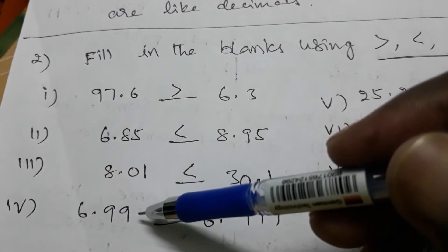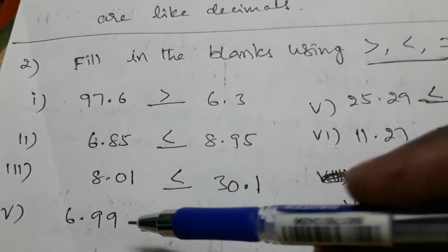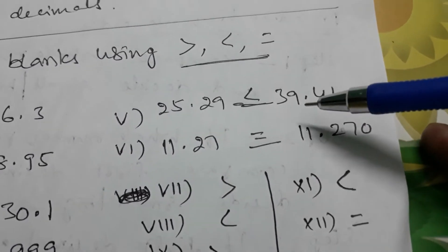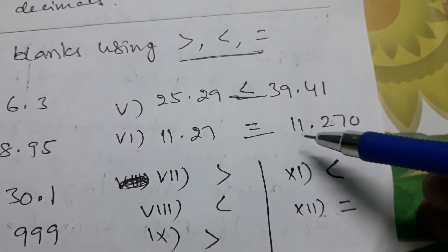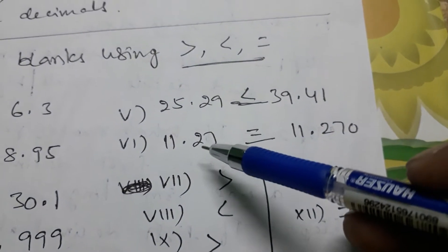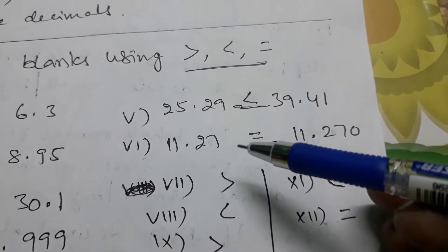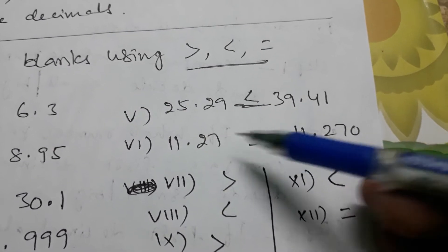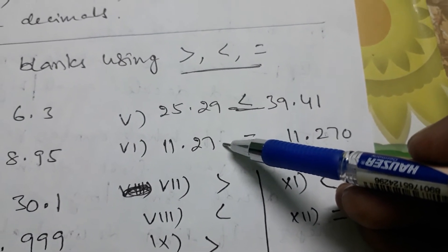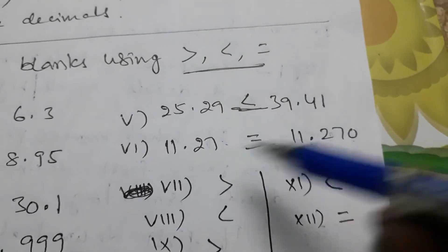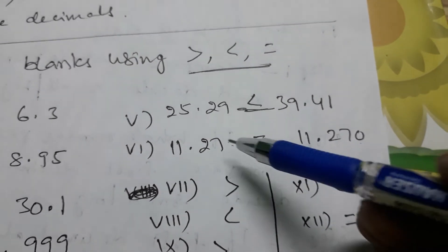No decimal at the end means that place is zero. We can write required zeros at the end. Next example: 25 and 39 — we can easily say the whole number part is greater so that decimal is bigger. Next: whole number parts are 11 and 11 — same. First decimal same, second decimal same. Third decimal: not there in one, so it is zero; not there in the other, also zero. Equal to zero — so these two decimals are equal, they are equivalent.